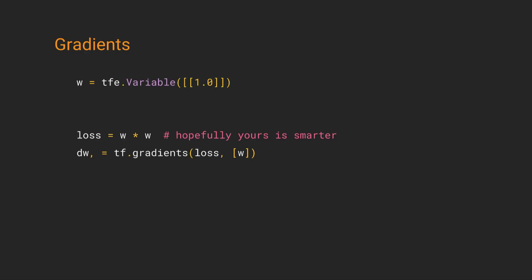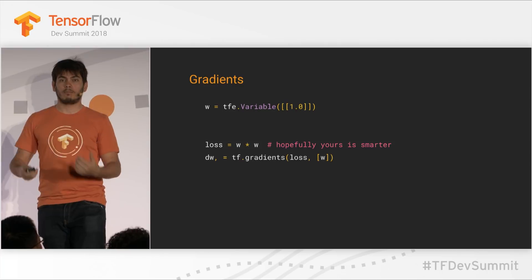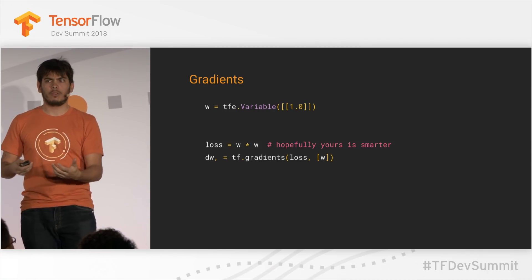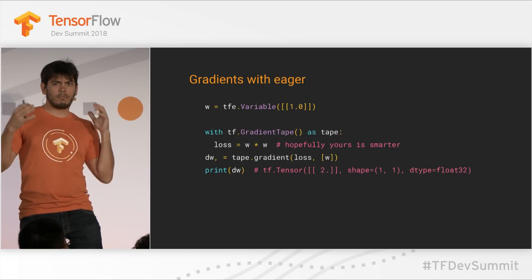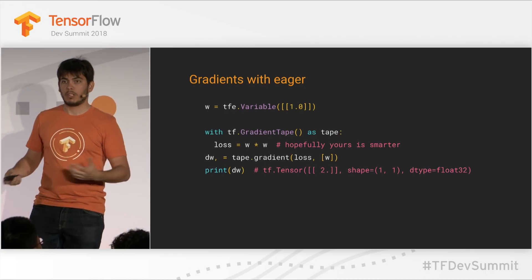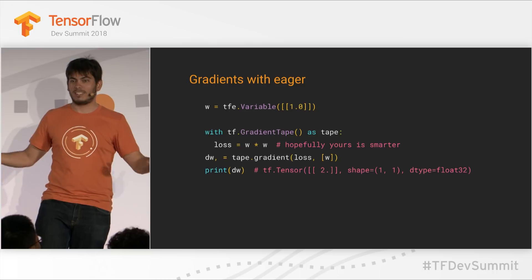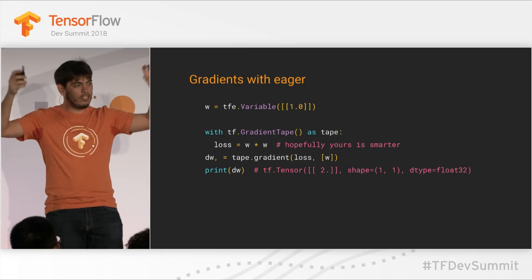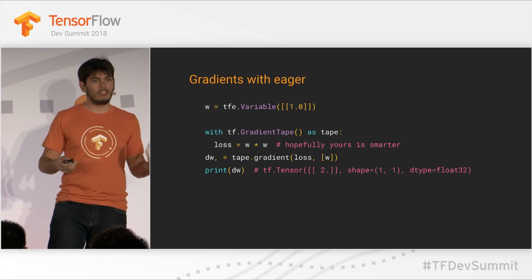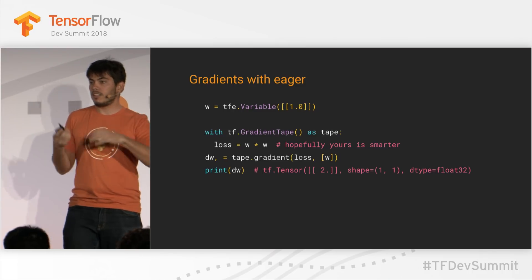You're familiar with how gradients work in normal TensorFlow — you create your variable, create your loss function, and call tf.gradients to differentiate it. But with eager execution, we try to be as efficient as possible. If you're going to differentiate your computation, you need to keep track in memory of what happened — like your activations. But I don't want you to pay for that tracking when you're not computing gradients. So when eager execution is enabled and you want gradients, you use a context manager to keep a tape active. The tape records all operations so we can play it back when computing gradients. Otherwise, the API is the same.